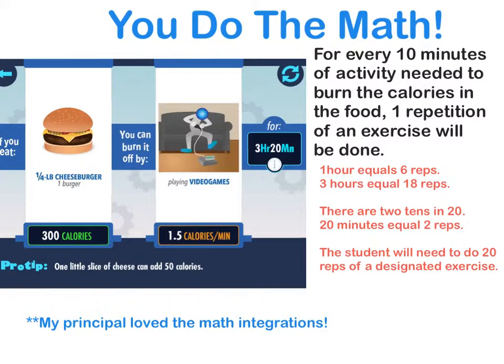For every 10 minutes of activity needed to burn the calories in the food, one repetition of an exercise will be done. Here you can see that a quarter pound cheeseburger takes 3 hours and 20 minutes to burn if you are playing video games.